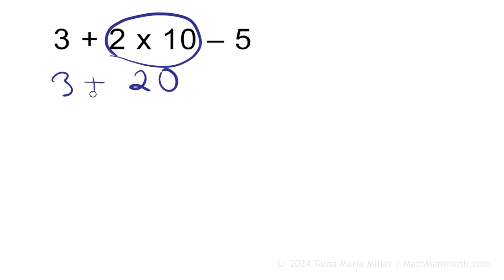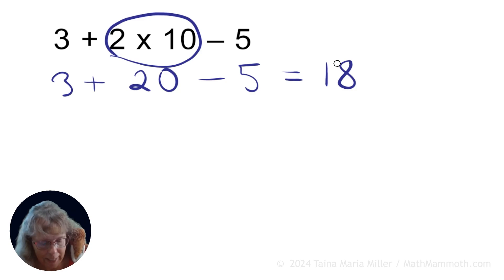So it becomes 3 plus 20 minus 5. And now there's only additions and subtractions left, so we go from left to right in order. And we have 3 plus 20 is 23, 23 minus 5 is 18, right Mathie? Yeah, he agrees.